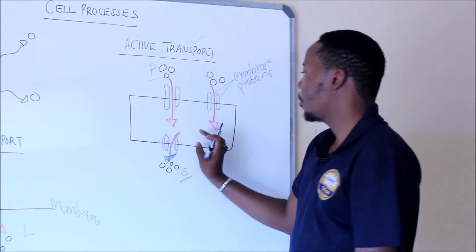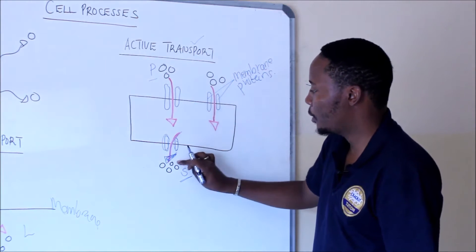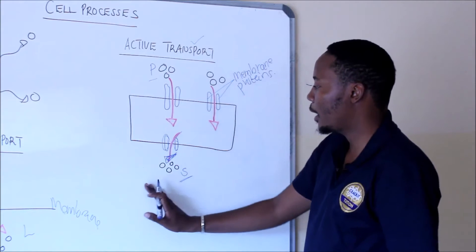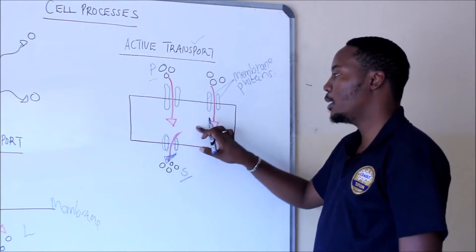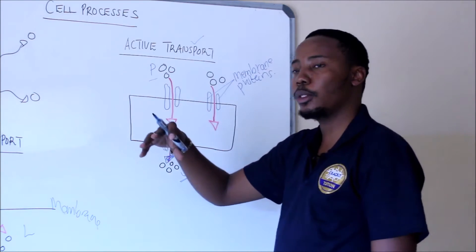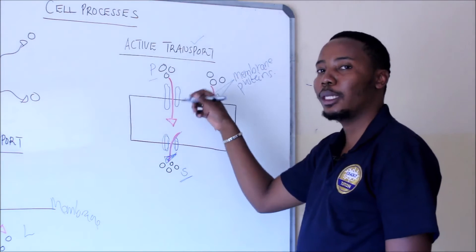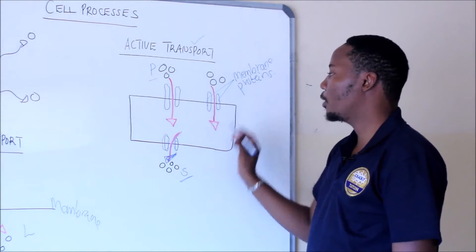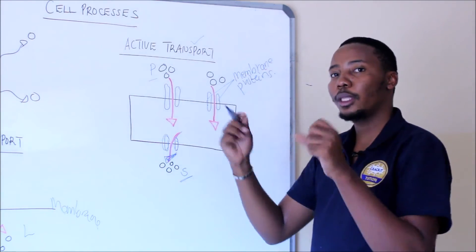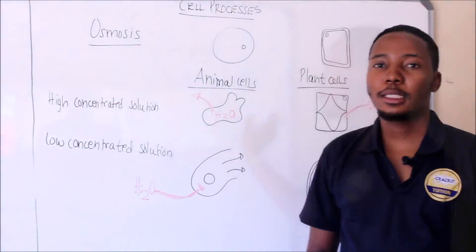The membrane proteins push that sodium out of the cell. It will be against the concentration gradient because if sodium is high outside and low inside, the expectation is that it should move from high to low. But in this case it goes back to where it belongs — outside the cell. That's why this is an energy-demanding process: these proteins need energy for the contraction in order to push these molecules against their concentration gradient.